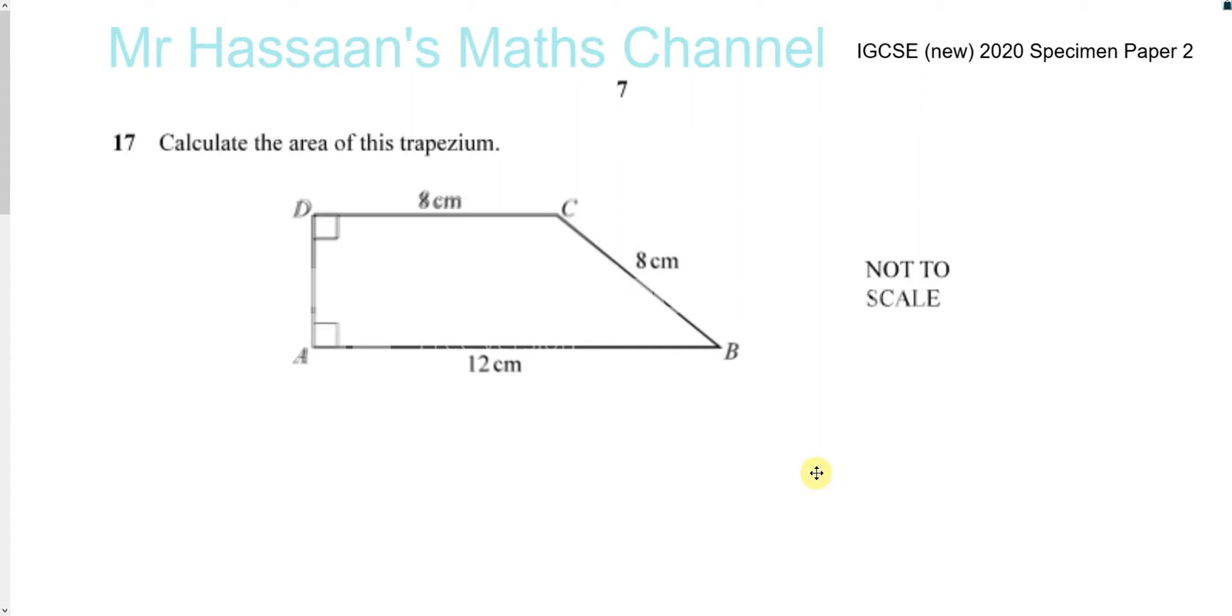Okay, now for question number 17. Here we have a trapezium, and we are asked to find the area of it. To find the area of a trapezium, we need certain bits of information: the lengths of the parallel sides and the height of the trapezium, which is the distance between those parallel sides.